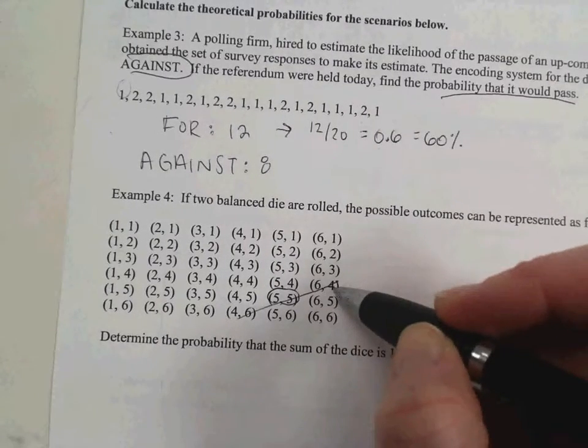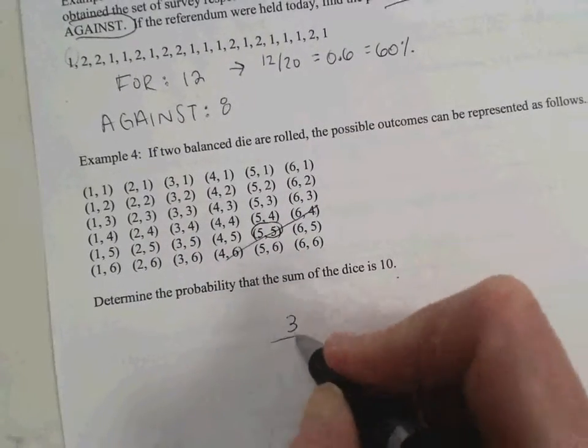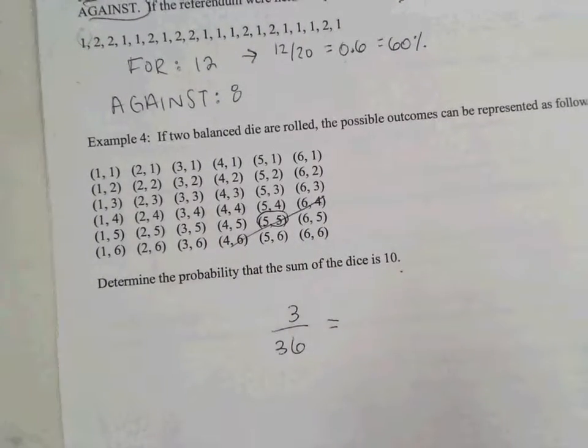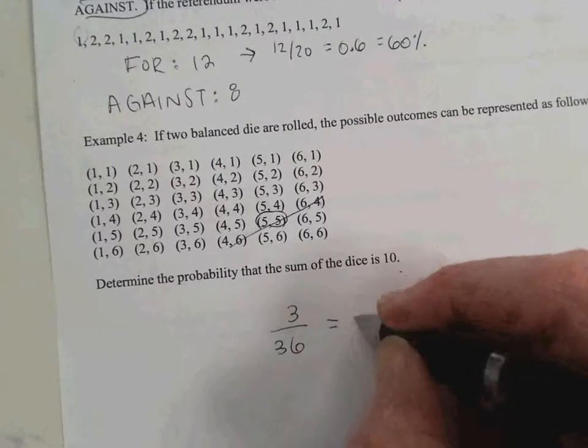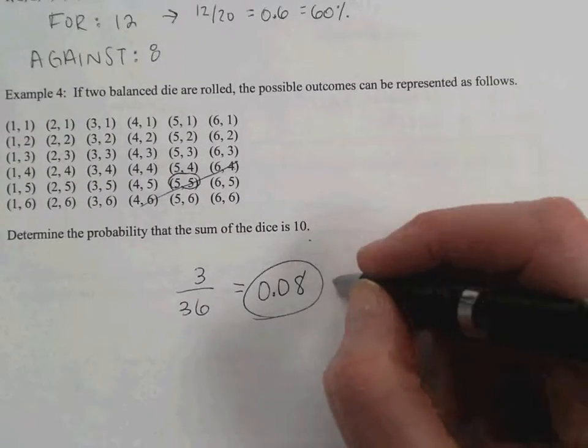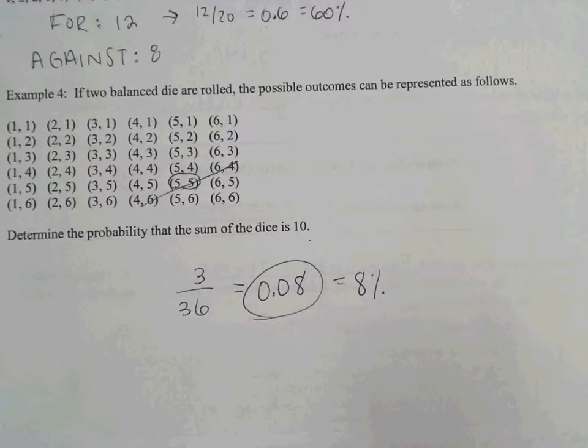You can see there's three times where the sum on the dice equals 10. Are there any other places where it equals 10? Nope. So 3 out of 36. If we divide 3 by 36, 0.08 is the probability there. So another way to write that would be 8%. And that is your notes on theoretical and experimental probability.